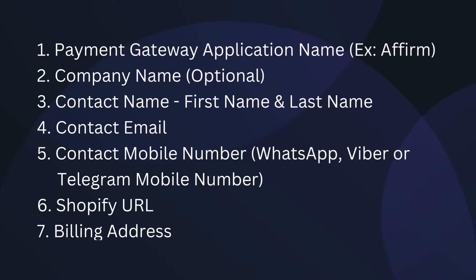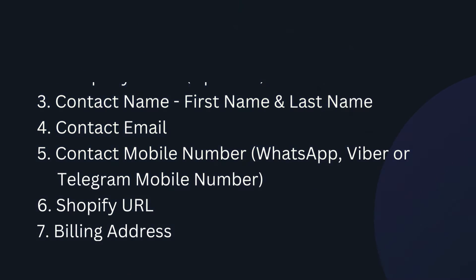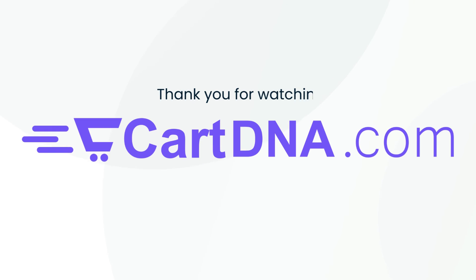Send these details via WhatsApp: 1. Payment gateway application name, for example Affirm. 2. Company name (optional). 3. Contact name — first name and last name. 4. Contact email. 5. Contact mobile number — WhatsApp, Viber, or Telegram mobile number. 6. Shopify URL. 7. Billing address. Thank you for watching.